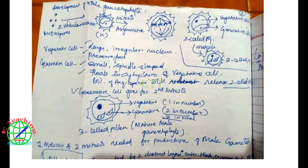We are going to talk about the anther. After that, we are going to talk about the microspores — those are the haploid cells. And then we are going to talk about the spore tetrad, which is the four cells formed from the pollen mother cells. In a pollen mother cell, we are going to talk about the minimum four haploid cells, the pollen grain cells or microspores. This is what we need to talk about for the well-developed male gametophyte.